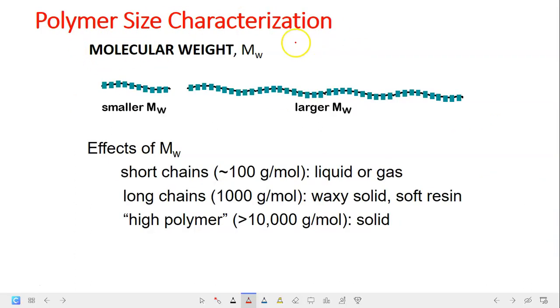Next is polymer size characterization. Polymer can have smaller molecular weight or larger molecular weight. For polymers with smaller molecular weight in which they are short chains, they are usually in the form of liquid or gas. For long chains in which an intermediate molecular weight, they are in the form of waxy solid or soft resin. But for high polymer in which they have very large molecular weight, it is usually present as solid.